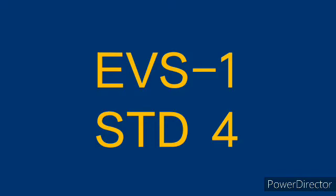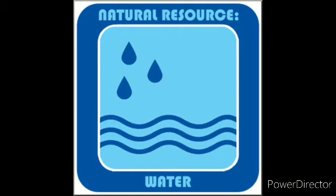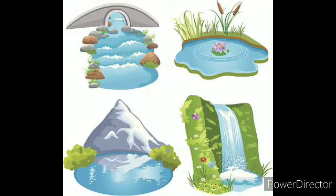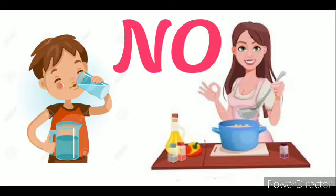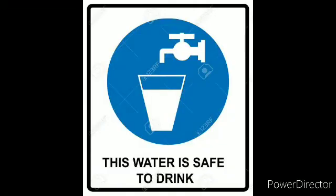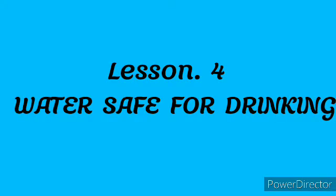Children, in the previous lesson we learnt that water is a natural resource and so we must use it carefully. Now we get water from different sources like rivers, seas, lakes, ponds etc. But can we use this water for drinking or for cooking? No. So first we have to see whether the water that we get is safe for us to use, especially for drinking. So today, children, we are going to learn a new lesson: water safe for drinking.